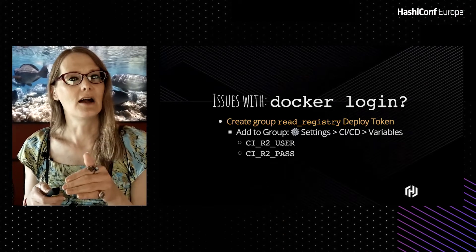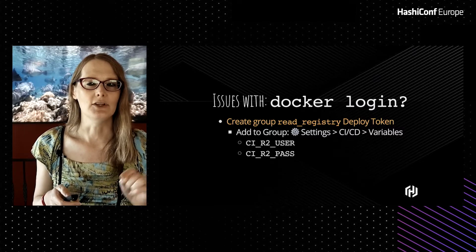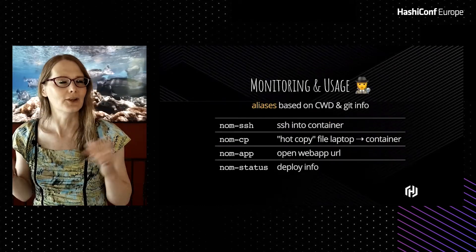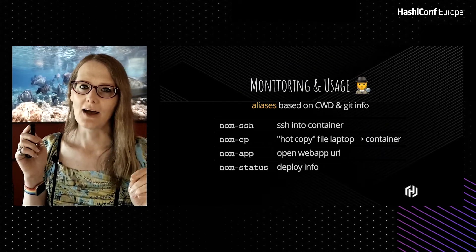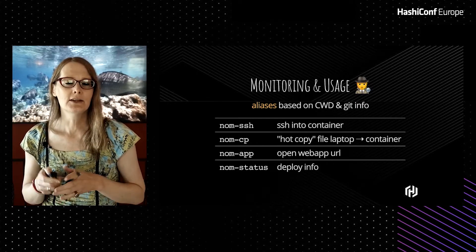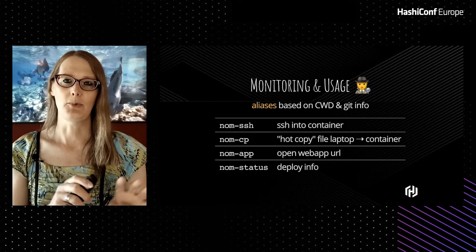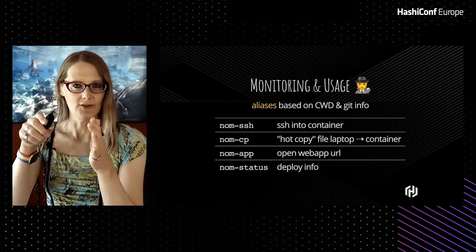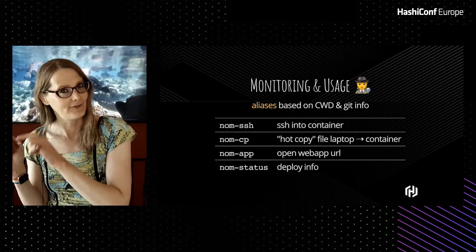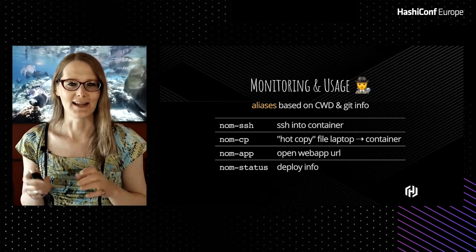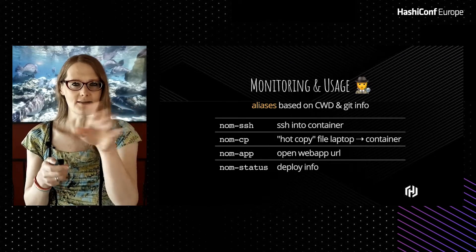At the Internet Archive we run everything on-prem — we have our own GitLab, our own Nomad clusters and Kubernetes clusters, and we're mostly moving to Nomad now. If you have issues with Docker login, you might want to consider creating a read registry deploy token and set those as CI/CD variables that pass right through into the job spec. We're using CI_R2_USER and CI_R2_PASS — which actually sounds like a droid. All of our devs use nice aliases that make things easy, whether on the command line or in VS Code. They look at your current working directory and do some Git information magic. You can type nom_ssh and it'll SSH you right into the container related to the codebase or branch you're looking at. Nom_cp will hot-copy a file into the container so you don't have to do a full pipeline. Node status and other aliases are all in the link above.